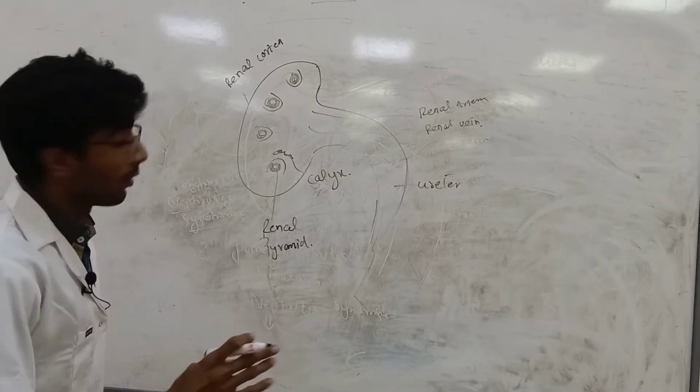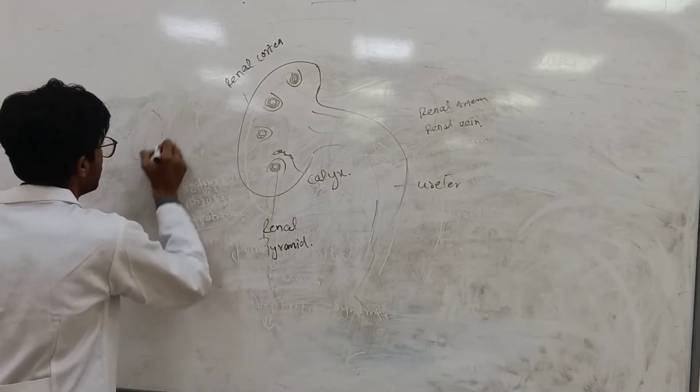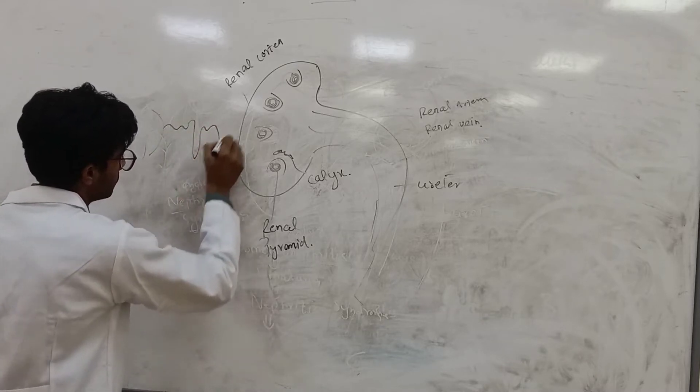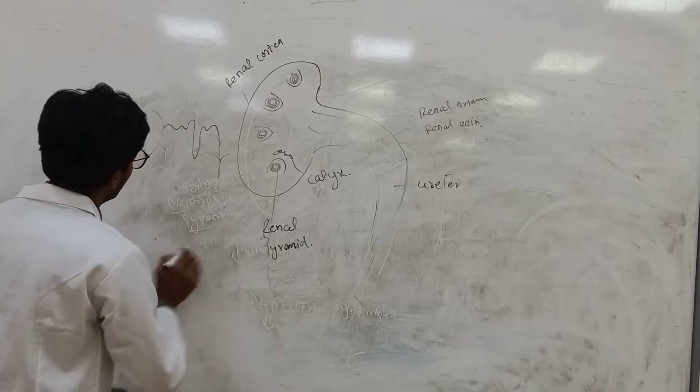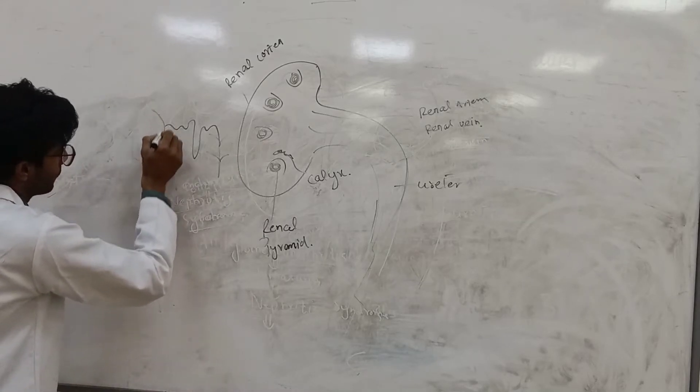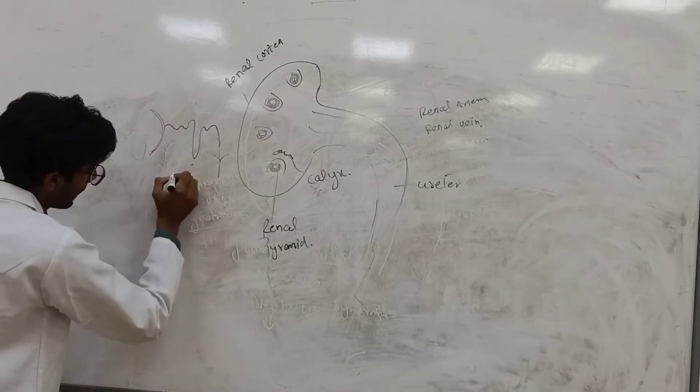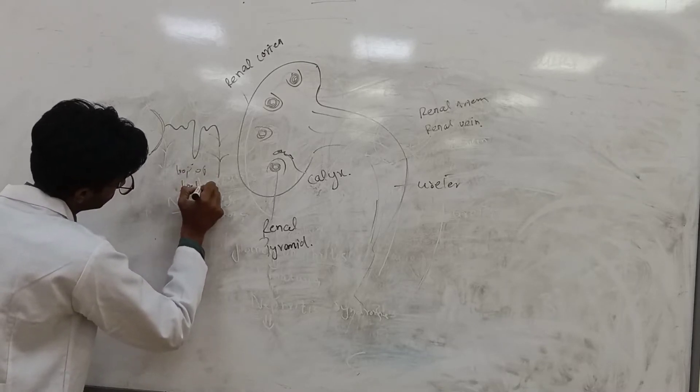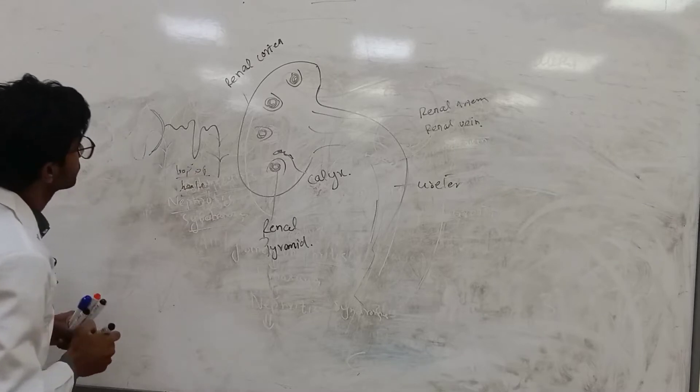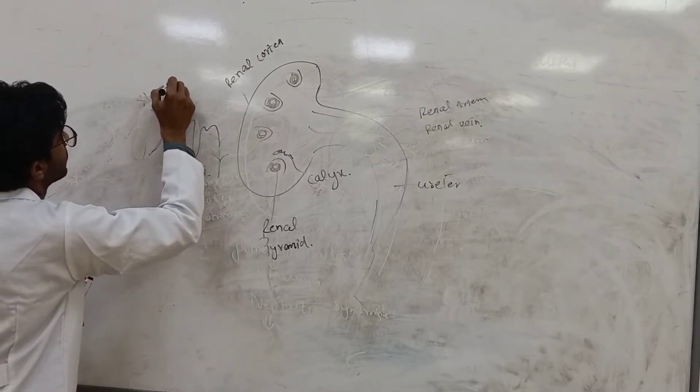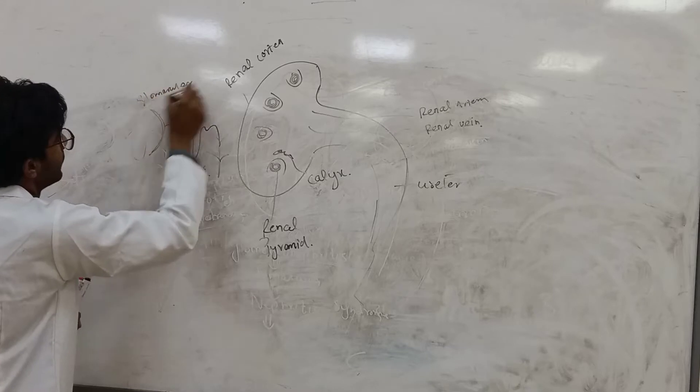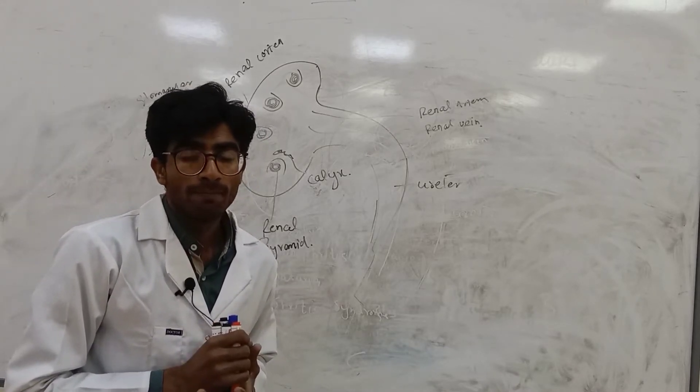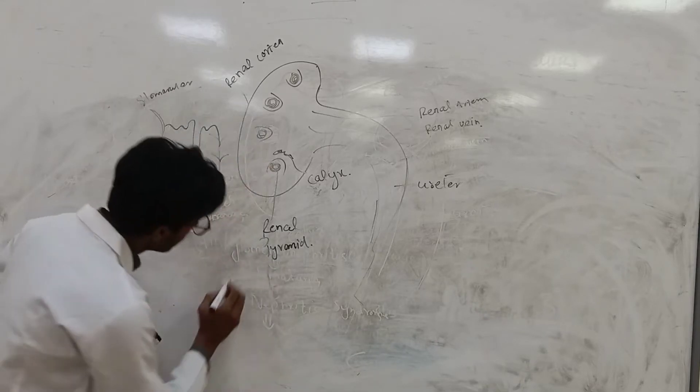I want to show you what's the structure of nephron. Nephron, I'm not perfect in drawing diagrams. Here, the nephron structure, this is glomerular capsule, loop of Henle, here. Glomerular capsule, in this region. In this region, infection happens.